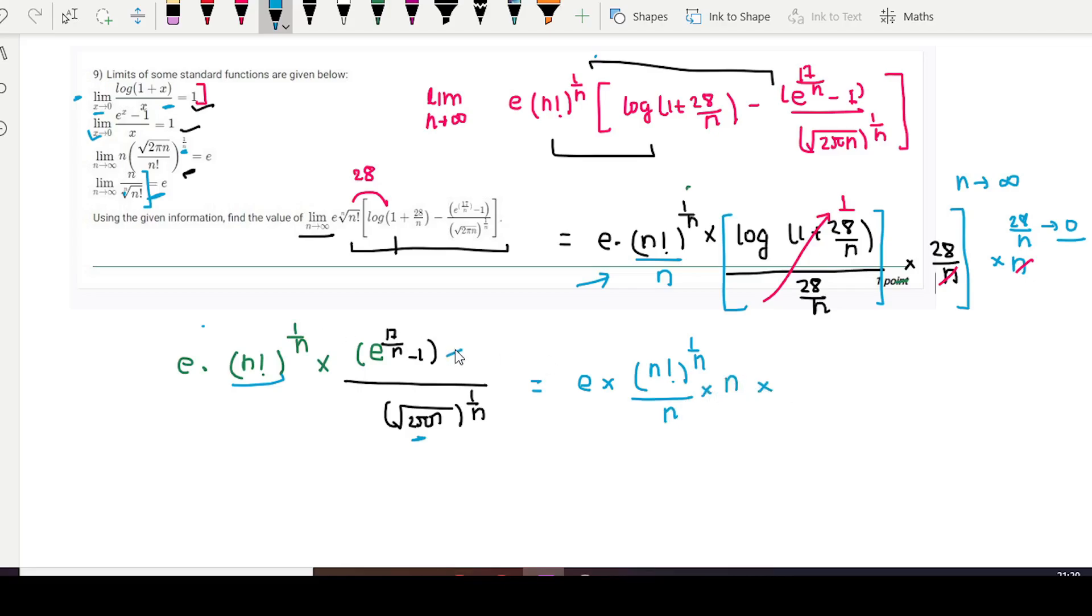So now we will do n factorial the whole raise 1 by n divided by n times n. So we will convert this into e to raise 17 by n minus 1 divided by 17 by n multiplied by 17 by n. And the denominator will become n times root over 2πn divided by n factorial to 1 by n times n factorial 1 by n.